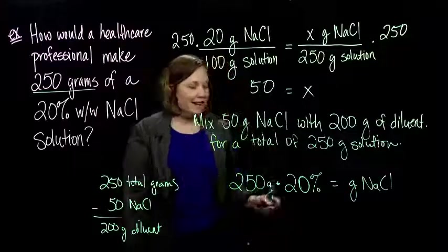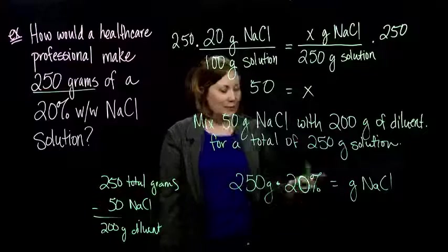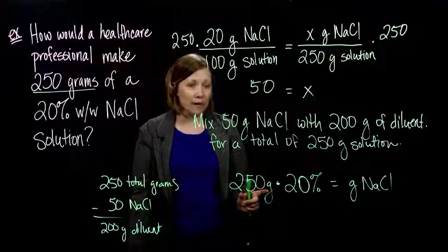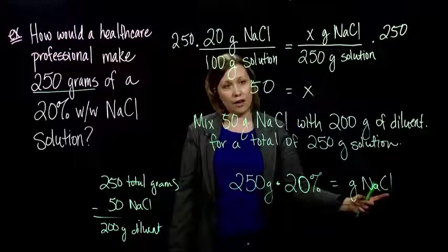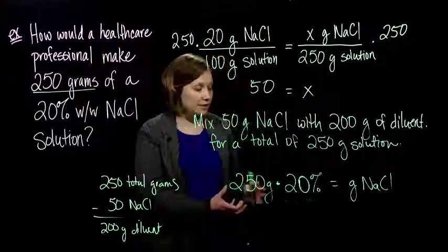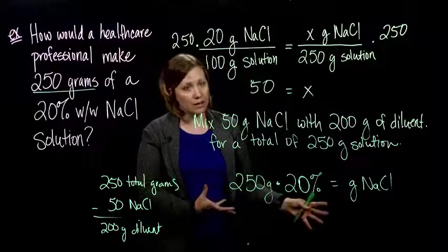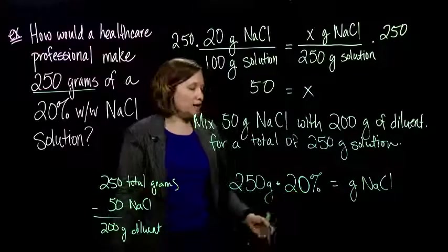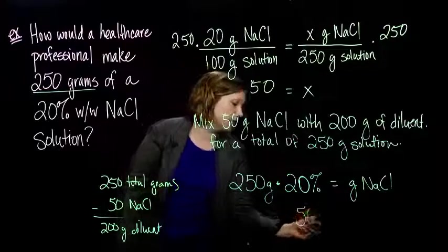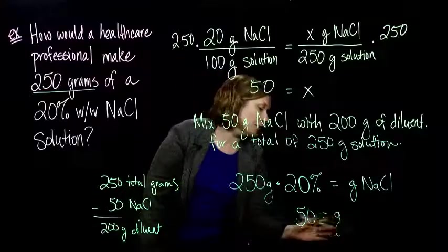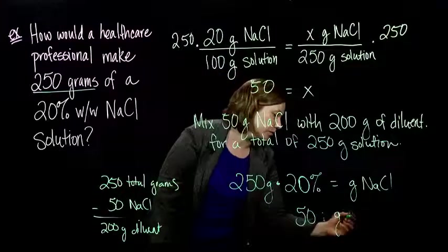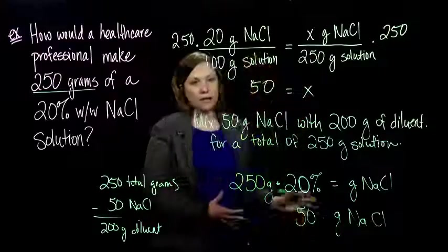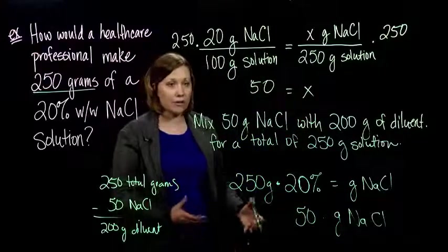That makes a big difference. So we're taking 20 percent of our 250 grams should be the amount of sodium chloride. So we can set up an equation in that way, just a percent equation. Multiply these guys together by changing this to a decimal or fraction, and you will in fact get the same answer. So you end up with 50 grams of sodium chloride. That is just another way to solve the problem.